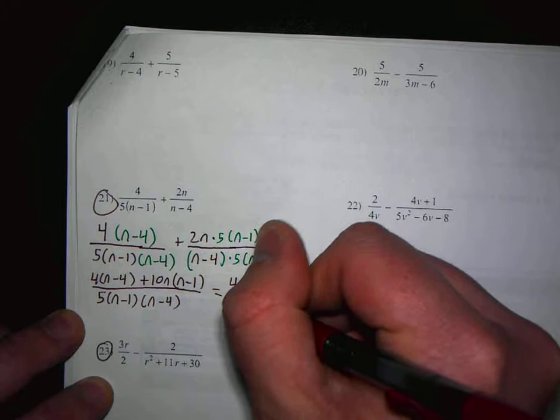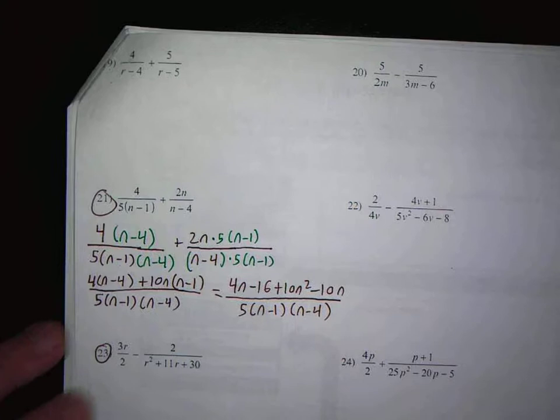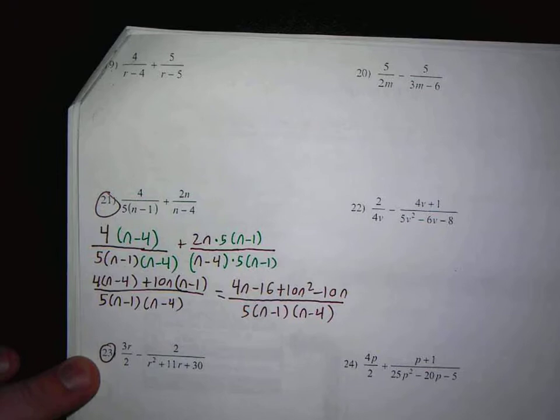Now the denominator, you may recall, that you should just leave it the same. Now I have terms that combine. It looks like I'm going to put the 10n squared first.